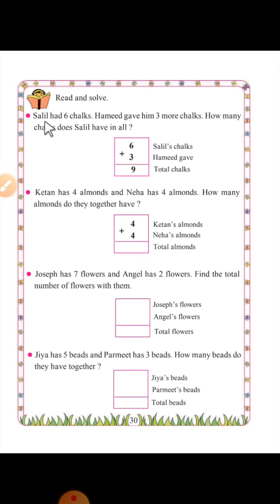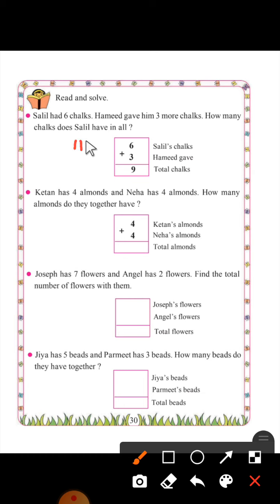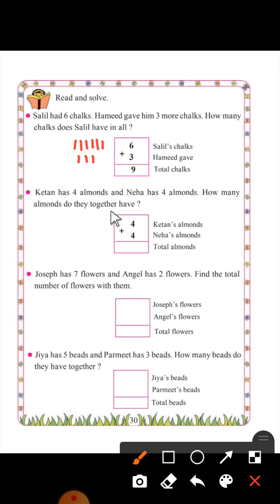Read and solve. Salil had six chalks. Hamid gave him three more chalks. How many chalks does Salil have in all? Salil has six chalks: one, two, three, four, five, six. And Hamid gave him three more chalks: one, two, three. Count all together: one, two, three, four, five, six, seven, eight, nine. So in total, Salil has nine chalks.